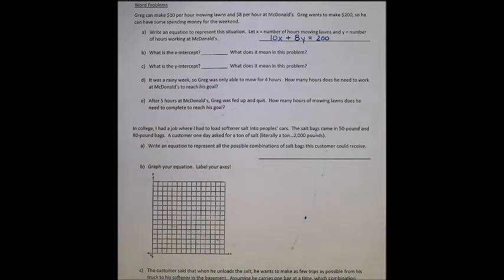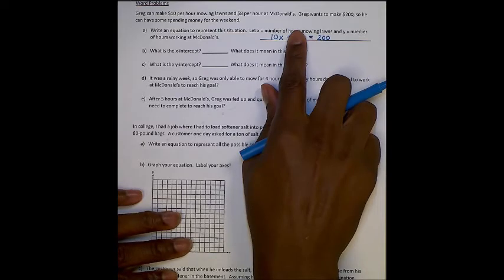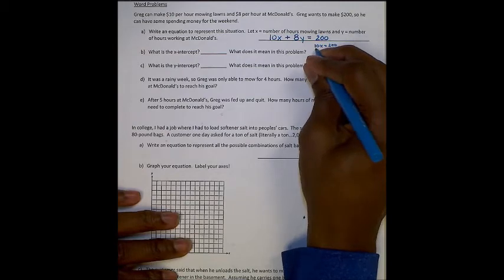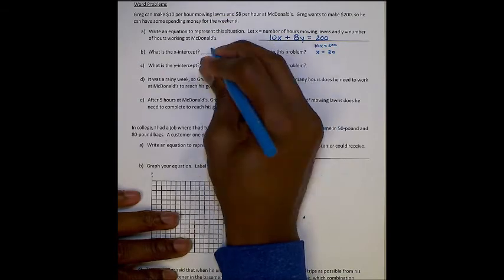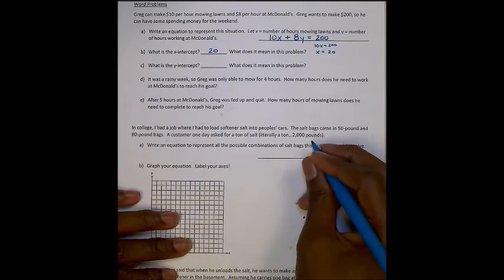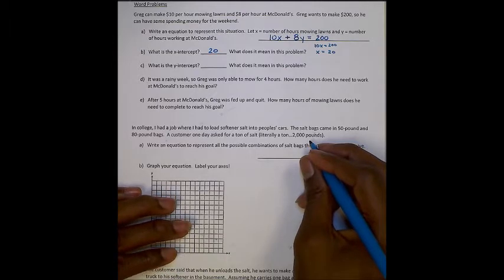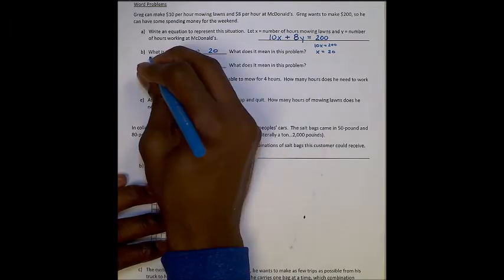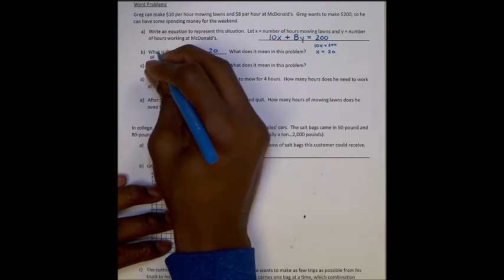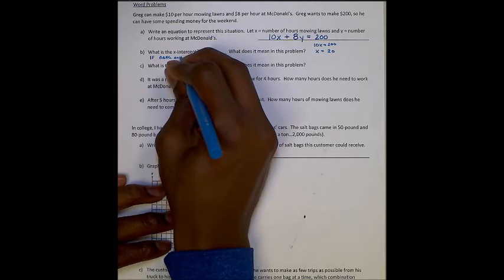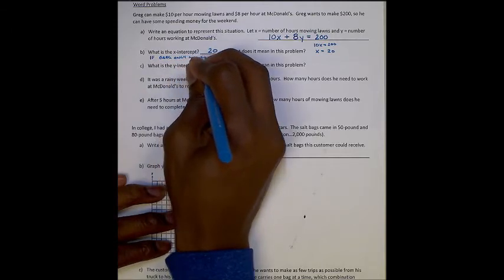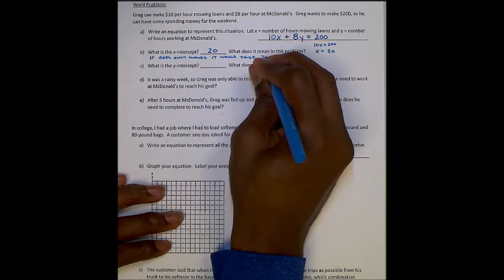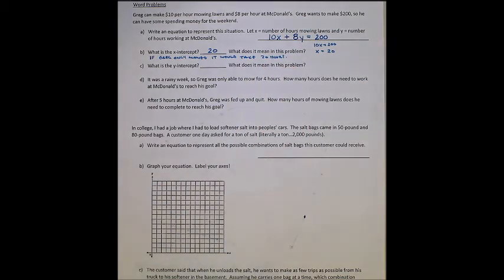So here we go. He can make $10 per hour mowing lawns. He's going to do that, and he might also work at McDonald's, which will add to his total. When he works at McDonald's, he can make $8 an hour. $8 per hour y. And he wants it to equal $200. He wants to make exactly $200. In this problem, what is the x-intercept? Remember, we can find that by covering up y, rewriting the problem and solving. So 10x would equal 200. Divide by 10, and x would equal 20.